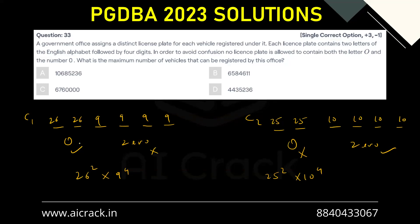Now think of one thing — there can be a case in case one where O is not present in the letters. Because we have 26 options, the letters can take any value from A to Z. So there can be a possibility where we take, say, C and D as letters and 8, 5, 3, 2 as digits. This satisfies case one. But this same possibility can also appear in case two, since O is not present there either. So we have counted these overlapping cases twice, and we have to subtract them.